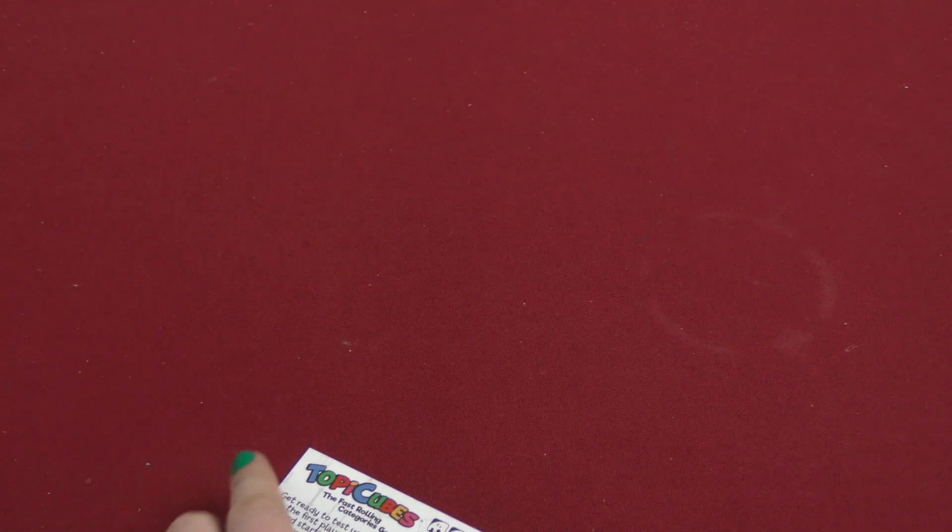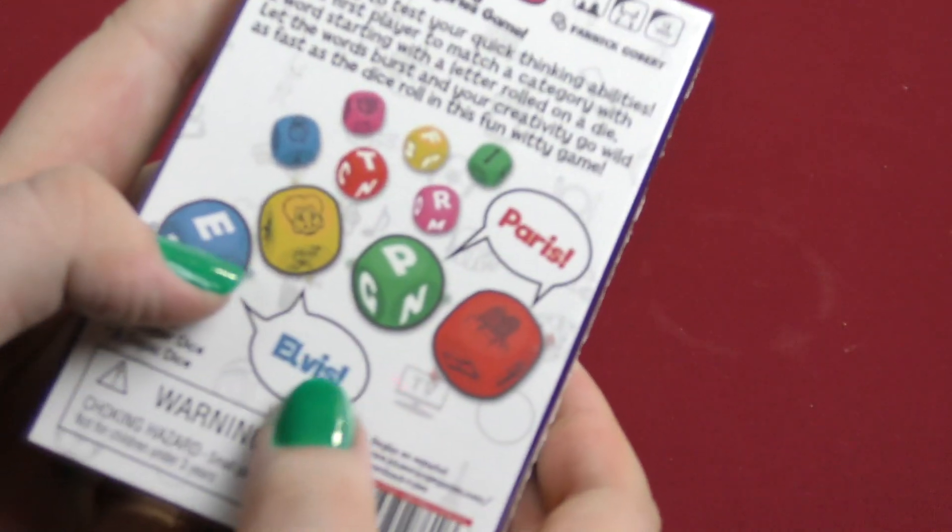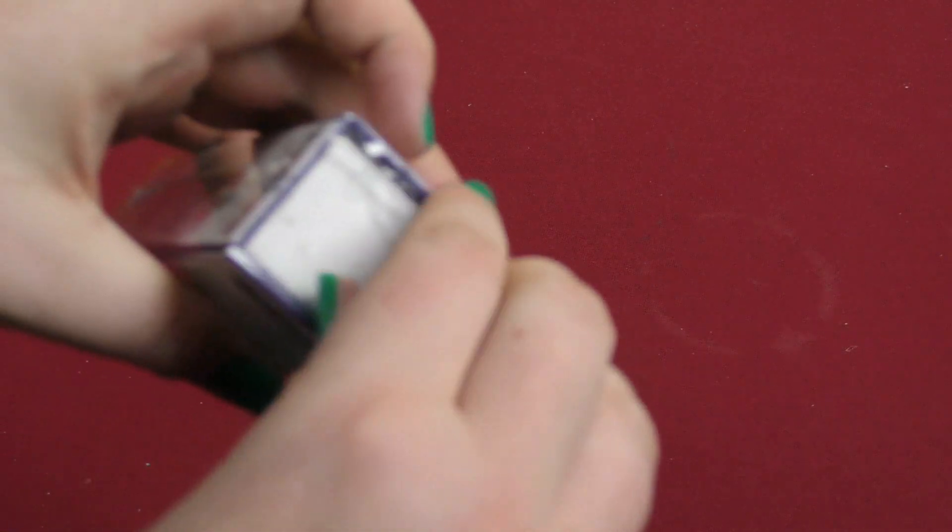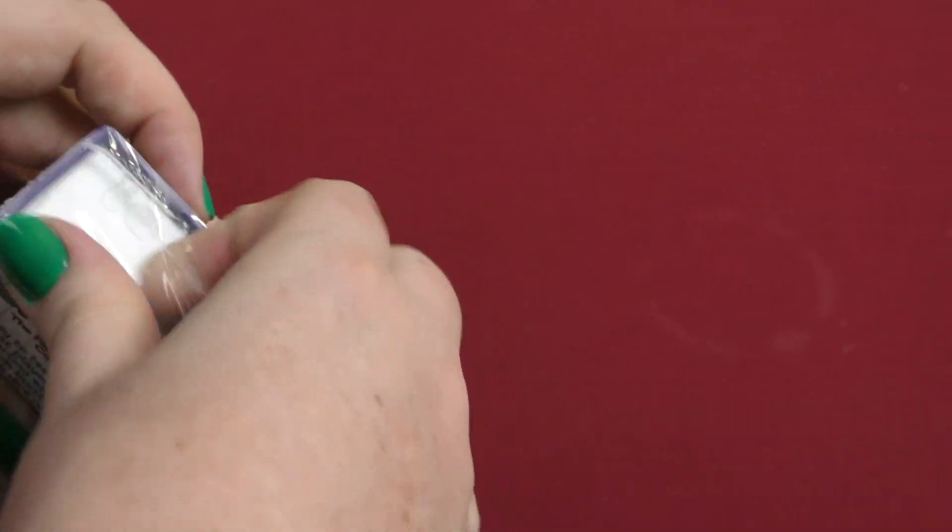We're apparently rolling dice and trying to think of a word that goes with that letter and then place. It looks super simple. We should open it up and see what's inside of this little itty-bitty box. Look, it's so small.